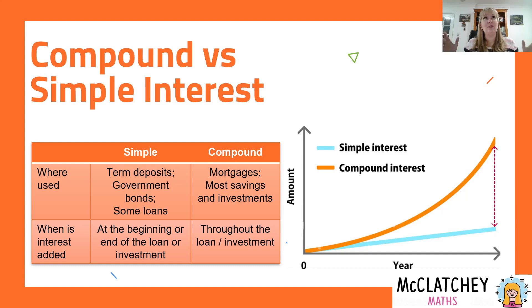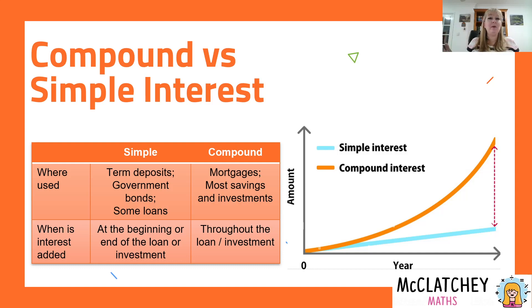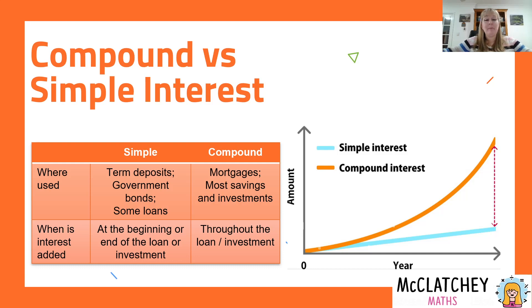A government bond is a form of investment where you lend money to the government so they can build infrastructure like roads, hospitals, and schools. When you buy a government bond, you agree to an interest rate upfront, and when it expires they pay you back your money plus the interest agreed to. There are also some other types of loans — for example, some car loans and some store loans — that often use simple interest.